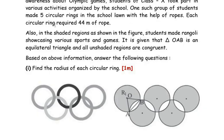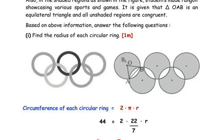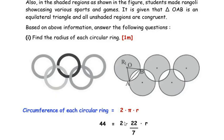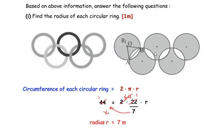The circumference or perimeter of each circle is 44 meters. Using the formula circumference = 2πr, with π = 22/7, we write: 44 = 2 × (22/7) × r. Since 2 × 22 = 44, the 44s cancel, and 7 goes to the other side, giving us radius = 7 meters. So the radius of each circular ring is 7 meters.